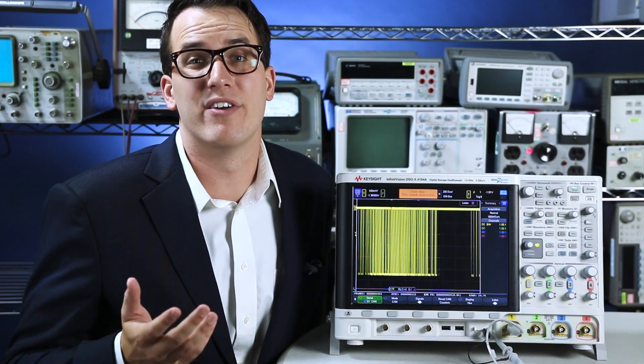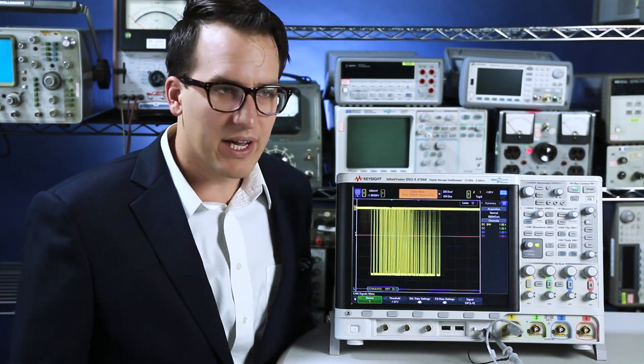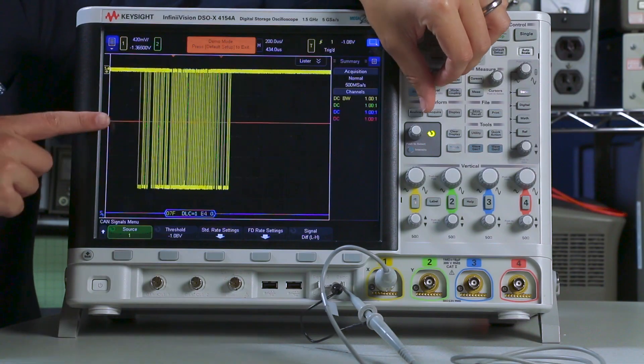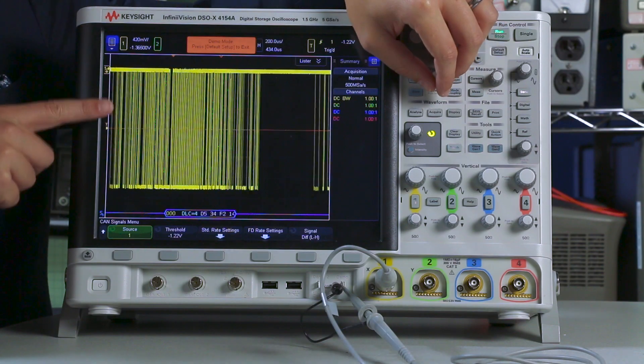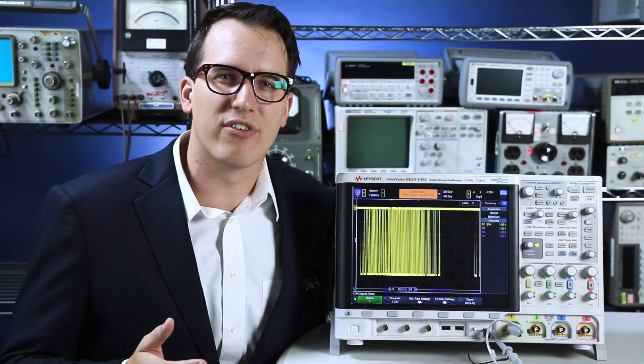The next thing you're going to want to do is make sure your thresholds are set up correctly. So I'm going to use my trigger knob and make sure that my thresholds are right in the middle of my bus there.